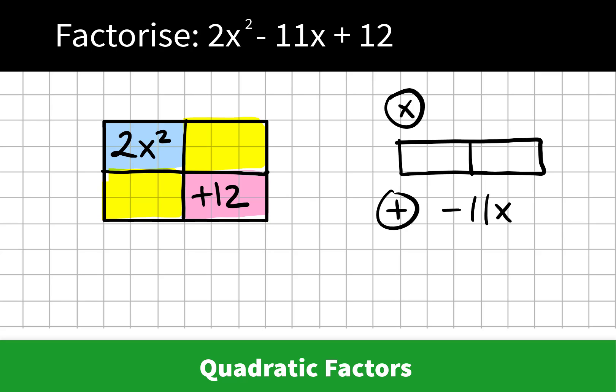We know that we want our two squares to add up to negative 11x. But we also know from experience that if we multiply one diagonal, it's the same as multiplying the other diagonal. So 2x squared multiplied by 12 gives us 24x squared, and the yellow diagonal has to multiply to this same number.